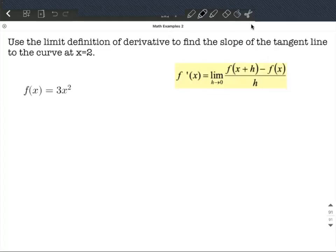We're going to use the limit definition of derivative to find the slope of the tangent line to this curve f(x) = 3x² at this x value of 2.